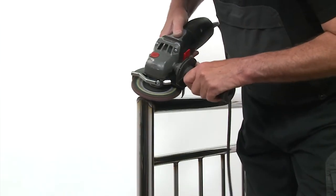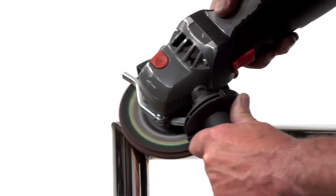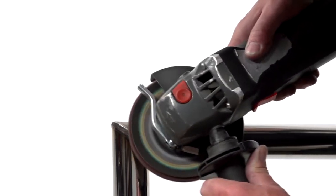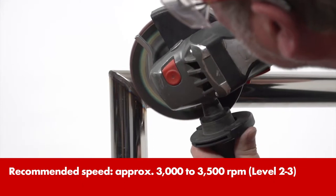Sand down the outer weld seam. Hold the machine at a flat angle for this and keep the sanded area as small as possible. To avoid any unevenness, only put pressure on the weld seam itself.